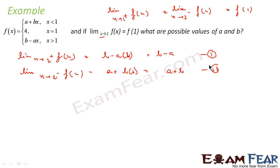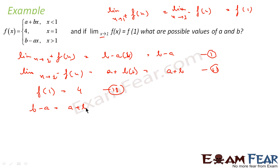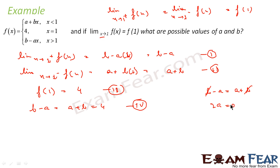This is the equation. And the value of f(1) is nothing but 4. So all three — left hand limit, right hand limit, and f(1) — are equal. So we can say that b minus a is equal to a plus b is equal to 4. Now we take these two: b minus a equals a plus b. The b's cancel and we get 2a equal to 0, or a is equal to 0.